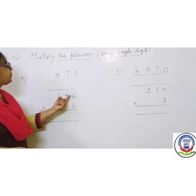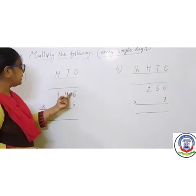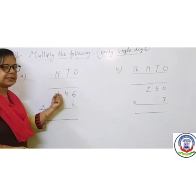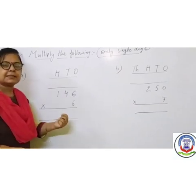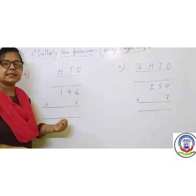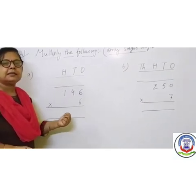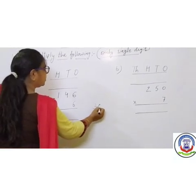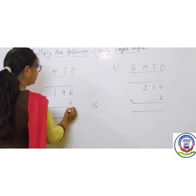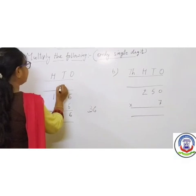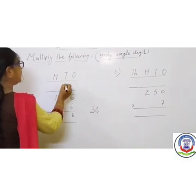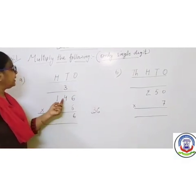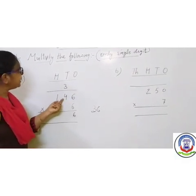Start multiplying the 1's place. 1's place is 6. 6 multiplied by 6 — 6 sixes are 36. We write 6 in the 1's place and carry forward 3 to the 10's place.